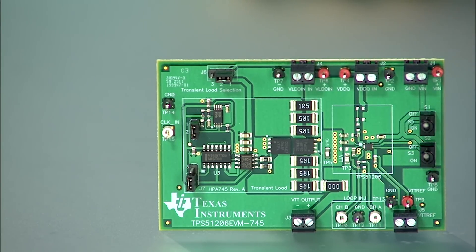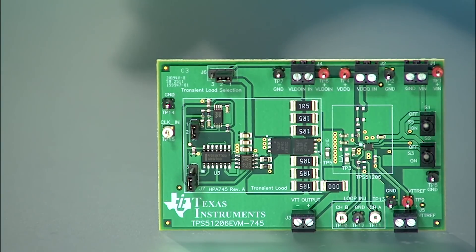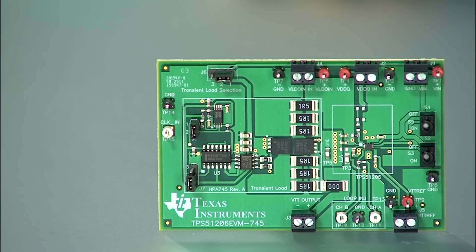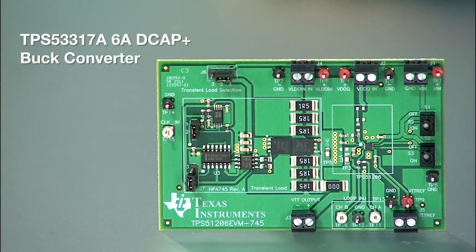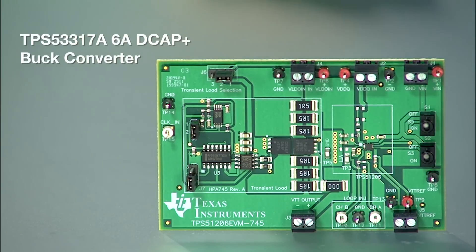In multi-DIMM, high density, high speed, high width systems such as servers, the VTT current can exceed 5 amperes, thus requiring a tracking VTT buck converter like the TPS53317A, a 6-amp DECA plus mode buck converter.